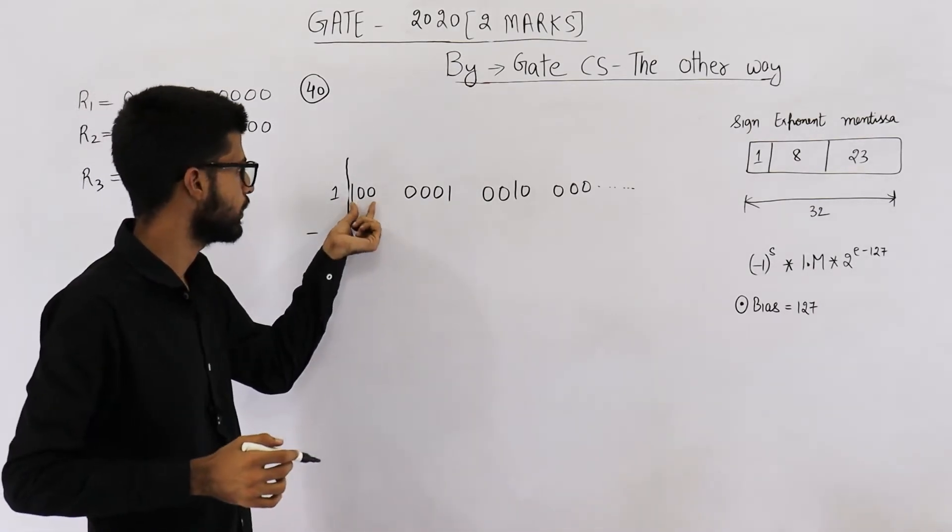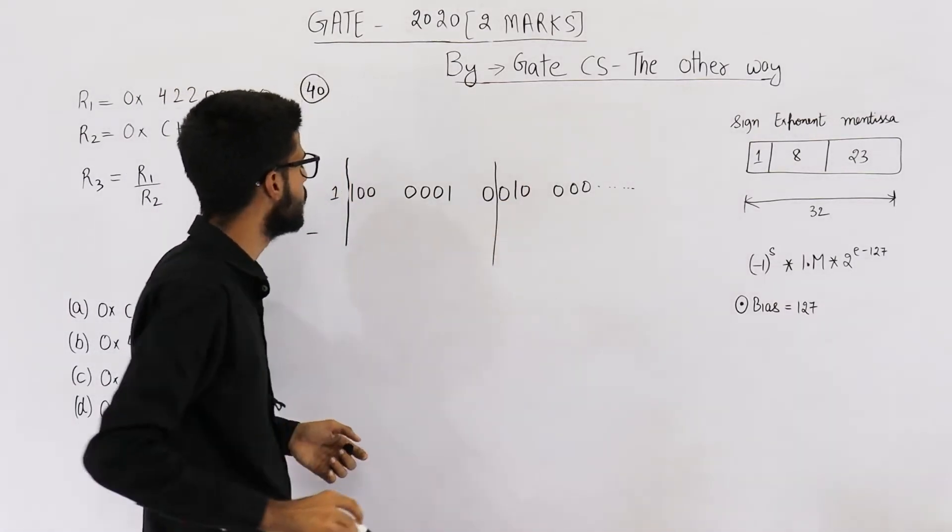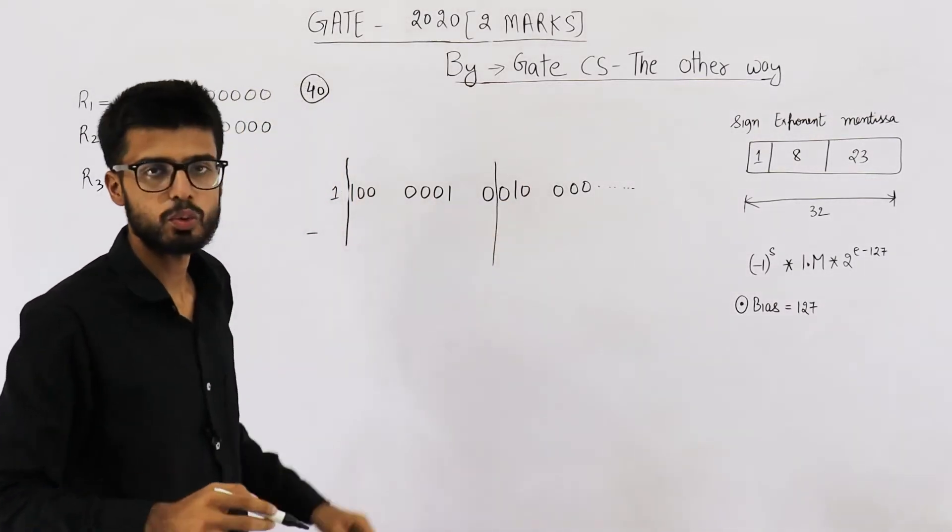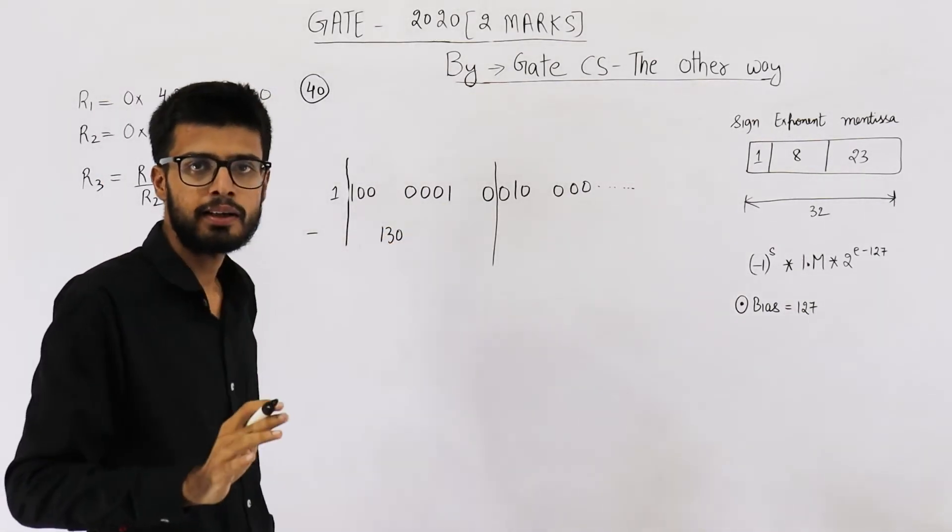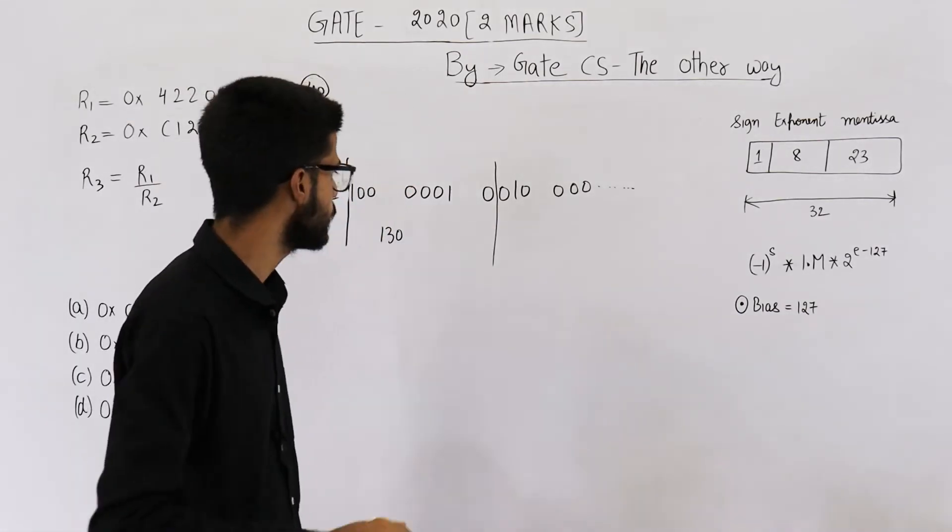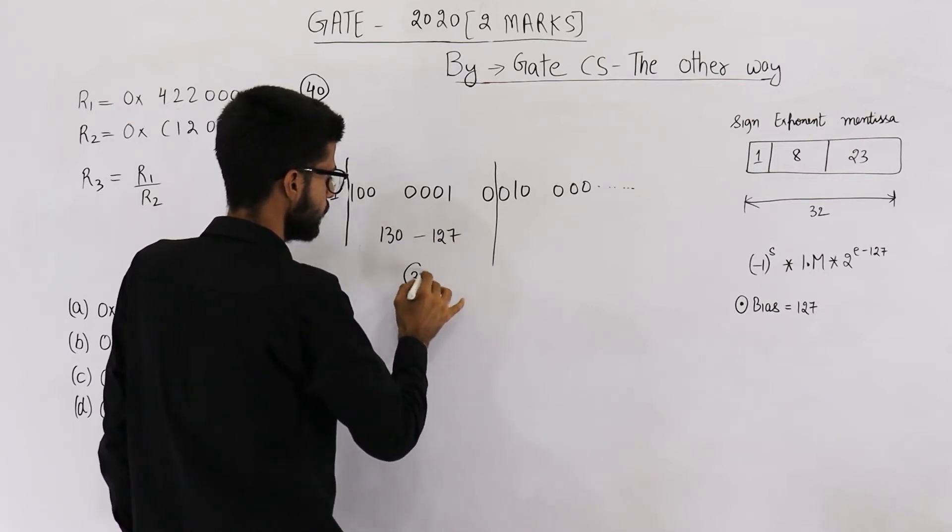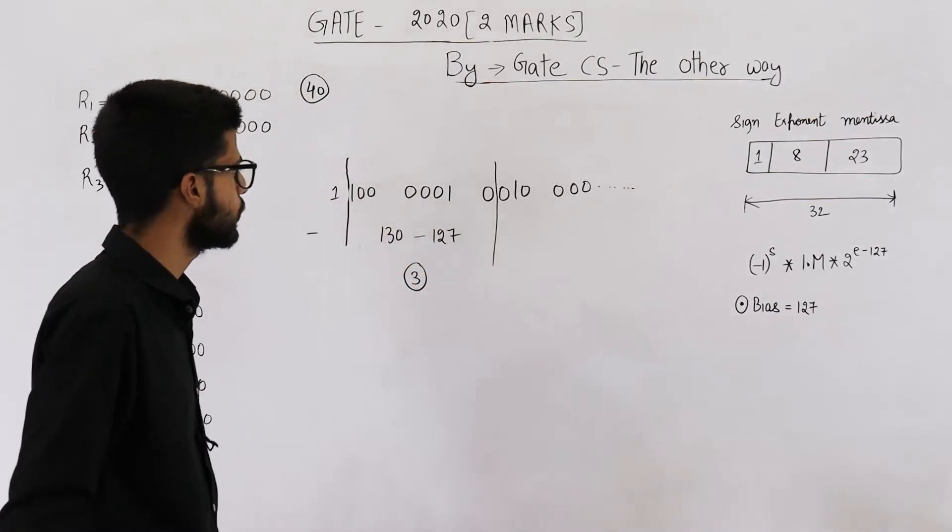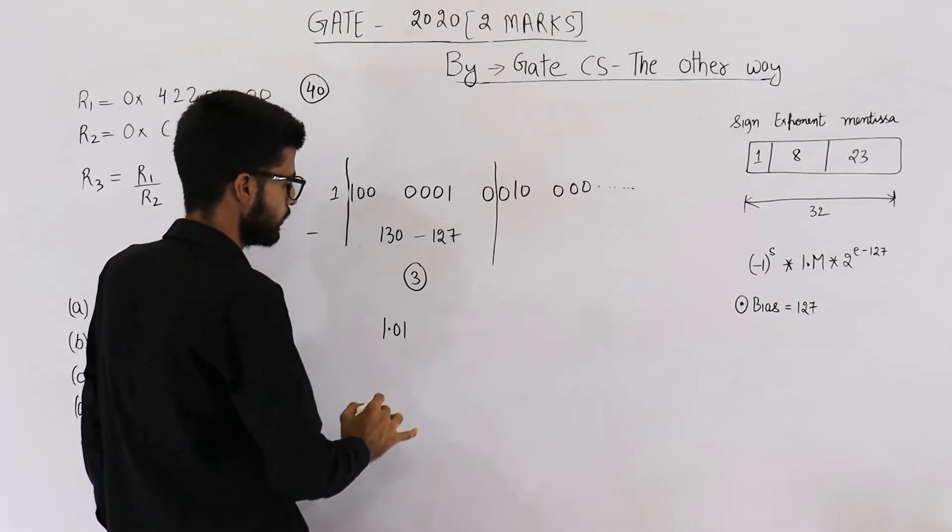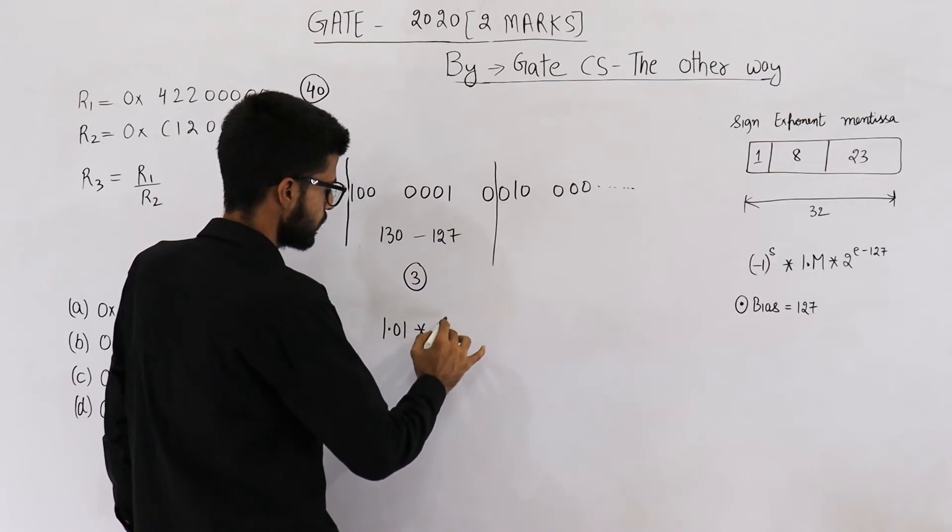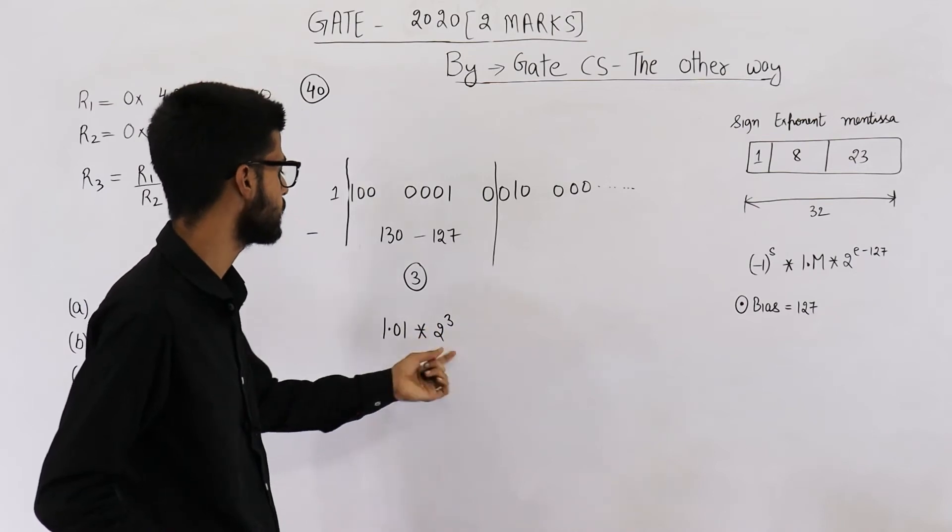Then next 8 bits, 3, 4, 5, 6, 7, 8, means till here. So this is 128 plus 2, that is 130. So biased exponent is 130, unbiased exponent will be 130 minus 127 which is 3.